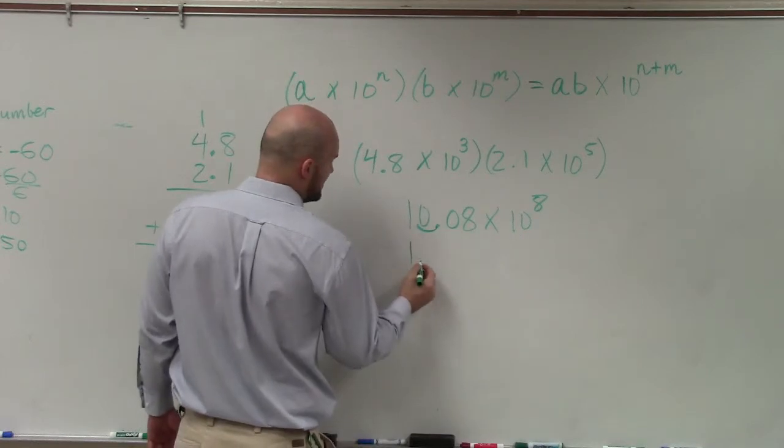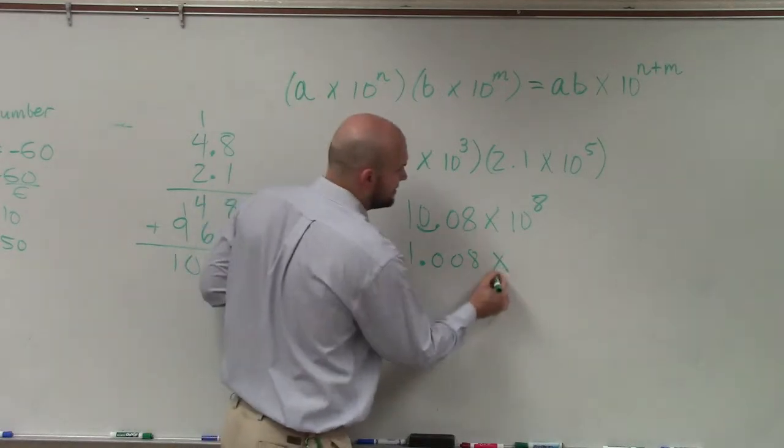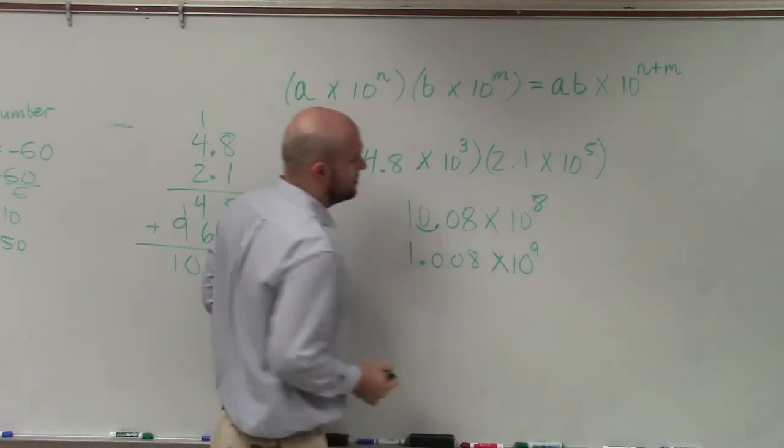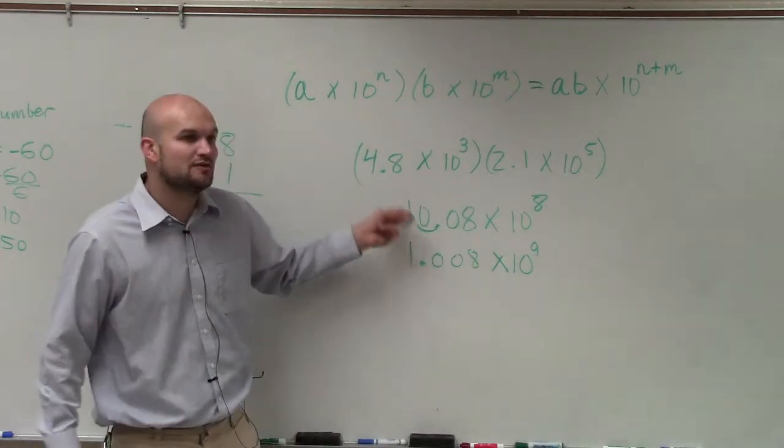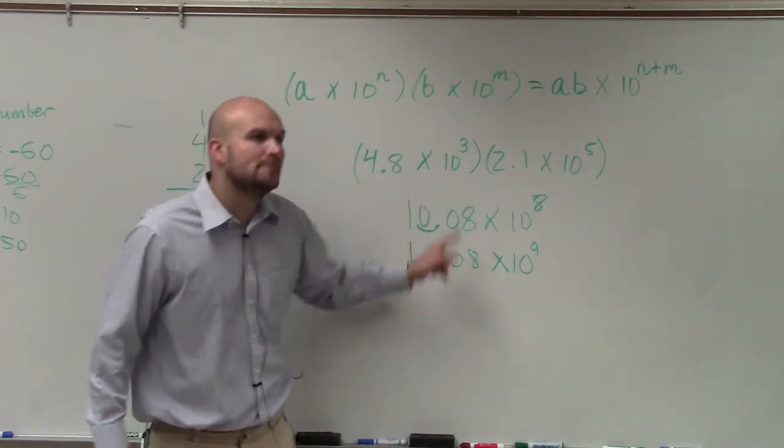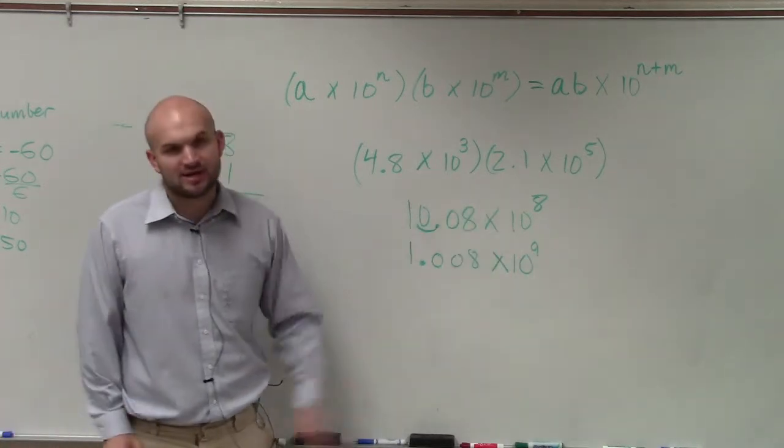So it's going to be 1.008. And then times 10. Oops. Well, I guess you wrote an answer. So now you guys see, since I moved it to the left, that means I'd have to go one more space to the right to get back to my same answer. So that's why it's 10 to the 9th.